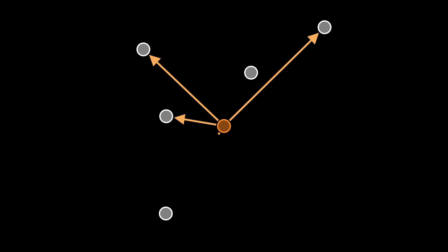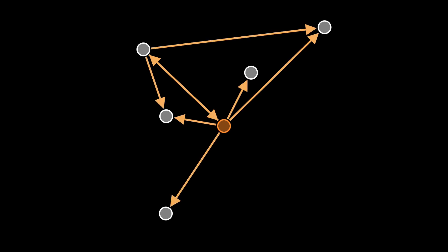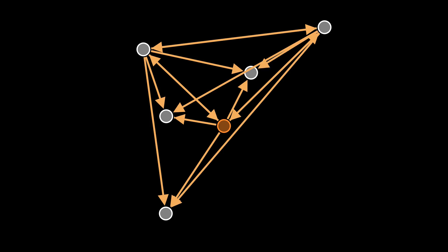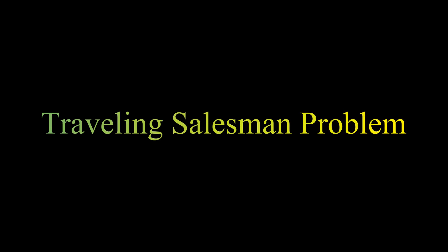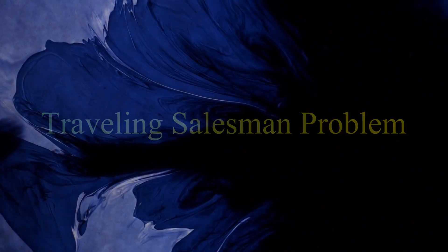A salesman wants to visit a few locations to sell his product. He knows the names of the locations and the distance between each one. What is the shortest route the salesman should follow so that he only visits each location once before returning to the starting point? This problem is the famous Traveling Salesman Problem, also known as TSP. It can be used for a delivery man to find the most efficient route to deliver his product, saving him time and fuel.